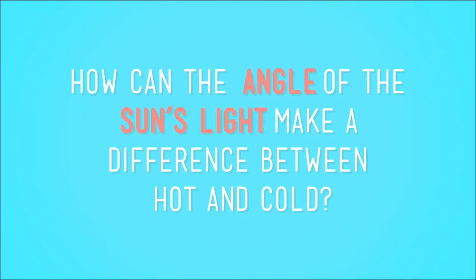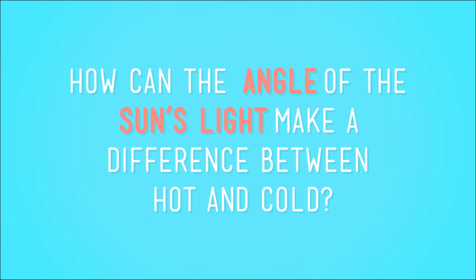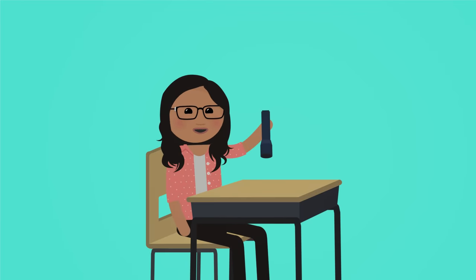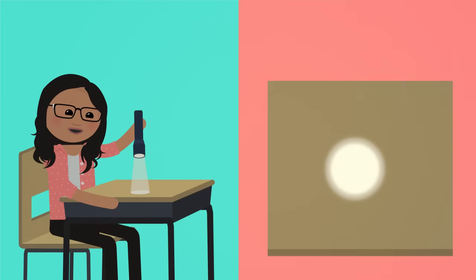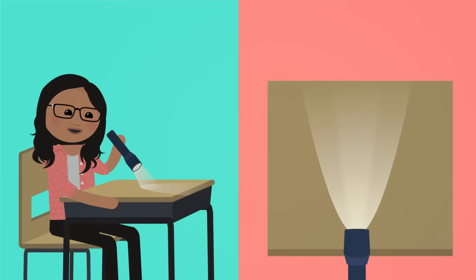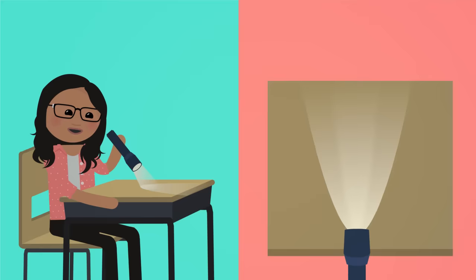But how can the angle of the sun's light make a difference between hot and cold? Try this little trick with a flashlight. Get a flashlight and dim the lights in your room a little bit. If you point it straight down onto your desk, you'll see a small, bright, concentrated circle of light — that's kind of how sunlight hits the northern hemisphere during the summer: bright and intense. Now move the flashlight down at an angle and point it at the top of your desk. See how the light isn't as bright and is less intense where it falls? That's like the sunlight we get in winter.